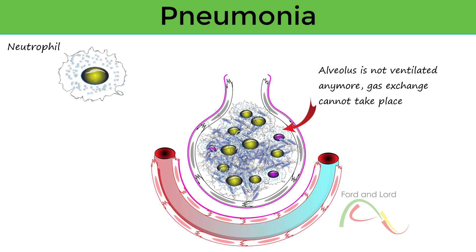Pus is mainly composed of dead neutrophils. The body's temperature is raised, so fever, cough, and lethargy are common symptoms. Since many alveoli at this stage are filled with fluid, pus, or even blood rather than air, gas exchange does not remain possible. In severe cases, this causes hypoxemia, which means low concentration of oxygen in the blood. If not treated, the condition can cause death.